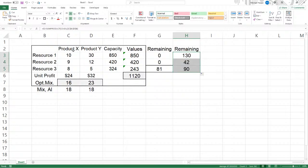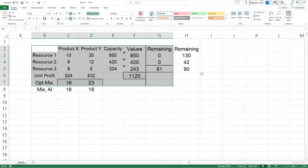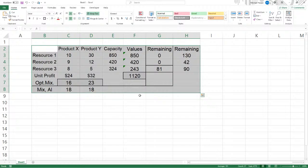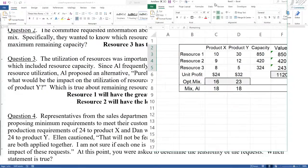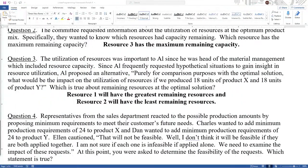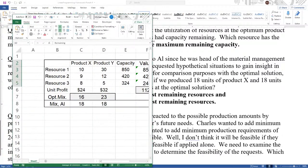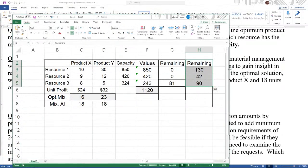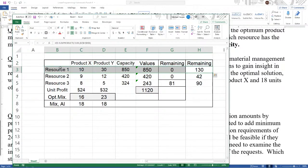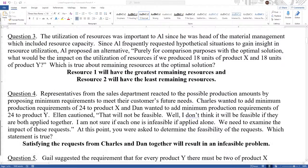And let's bring this down. So for Al, that's that question. This one's Al's question. We can come over here and we can see this is the remaining capacity: 130, 42, and 90. We can see here, it increases a little bit, that resource one has the maximum. Resource two has the minimum. So it's one, three, two. So resource one will have the greatest remaining resources and resource two will have the least remaining resources. That's good.